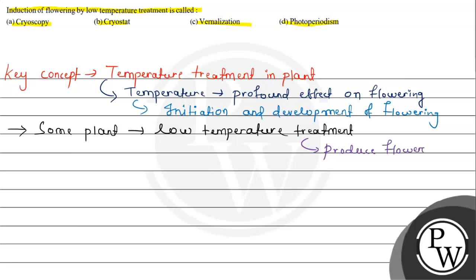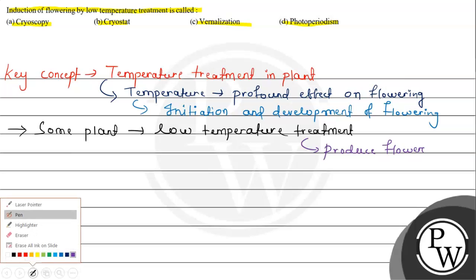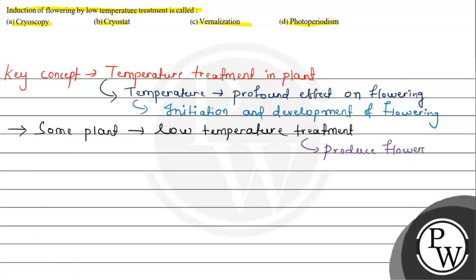This process is called vernalization. This low temperature treatment is called vernalization. It helps to promote and it promotes the flowering process in certain plants. The question asked: induction of flowering by low temperature treatment is called — so the correct answer is option C, vernalization.